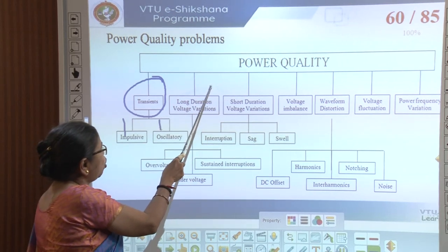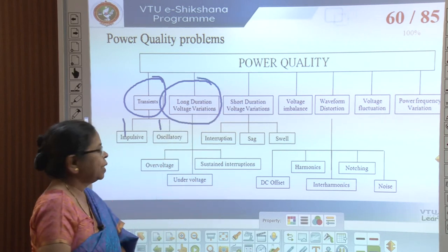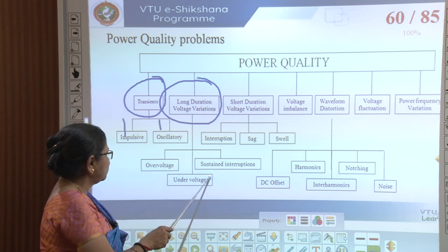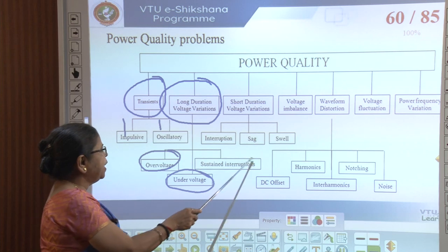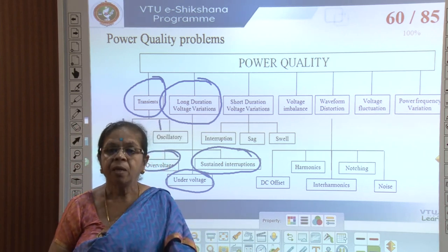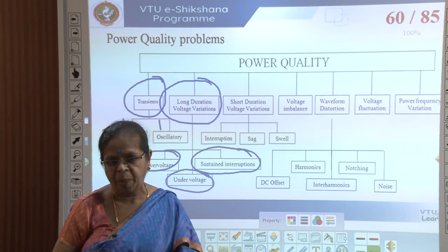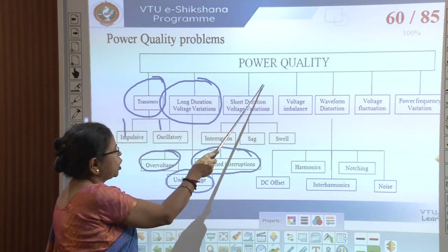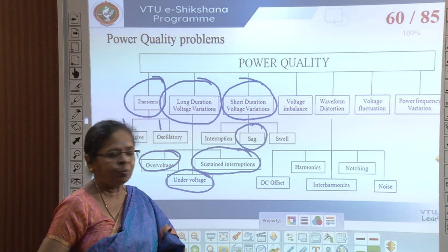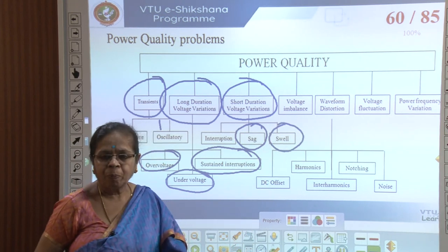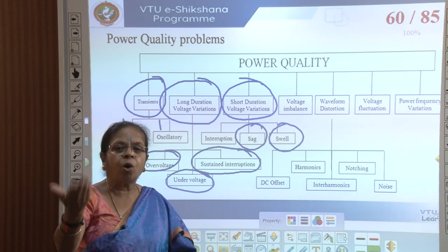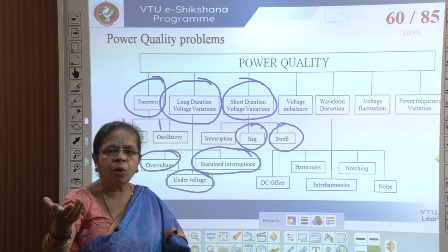The second type is long-duration voltage disturbance, lasting for a longer time. This includes over-voltage, under-voltage, and sustained interruption. Under-voltage means less than specified, over-voltage means more than specified, and sustained interruption means loss of power for a significant time. Then we have short-duration voltage variations: sag means reduced voltage for a short duration; swell means increased voltage for a short duration; and a short interruption lasts for something like 30 seconds. A sag that lasts longer becomes an under-voltage; a swell that lasts longer becomes an over-voltage.